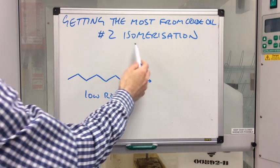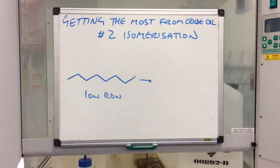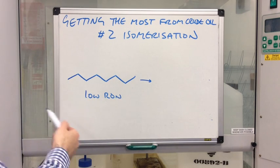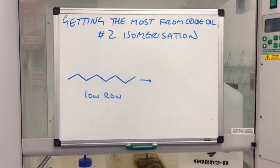So if we can turn this into a branched isomer, then we are going to increase the RON value. So basically, all we have to do in this equation is turn this into a branched isomer.